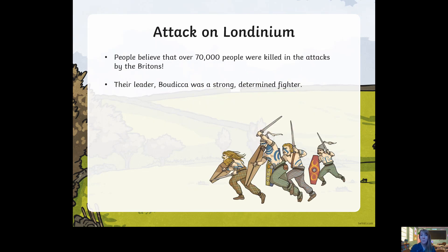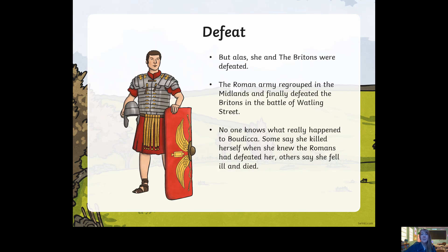People believed that over 70,000 people were killed in some of the attacks by the Britons. But their leader Boudicca was a strong, determined fighter. She tried her best and there were lots of battles, and a lot of the time the Britons were winning. But alas, she and the Britons were defeated — if you're defeated, it means you lose. The Roman army regrouped in the Midlands and finally defeated the Britons in the Battle of Watling Street.